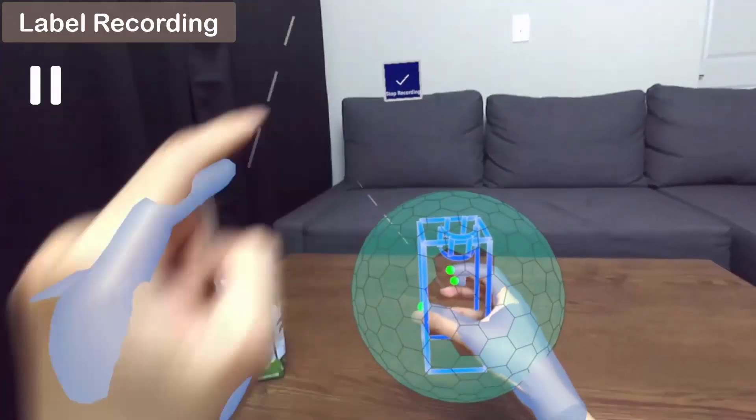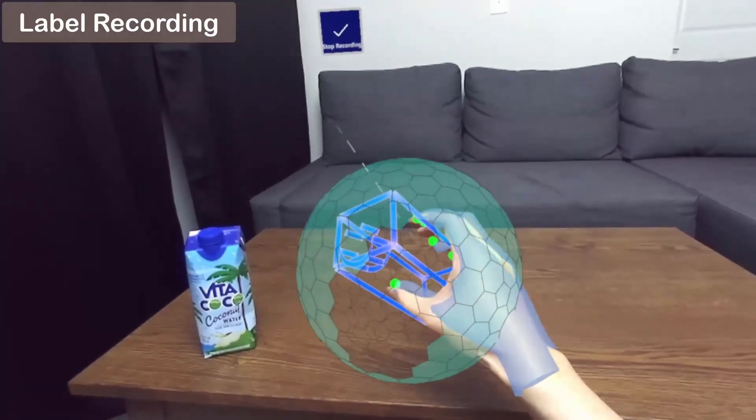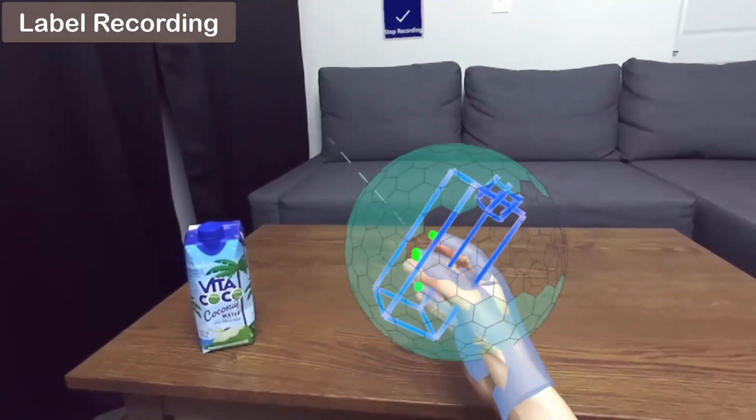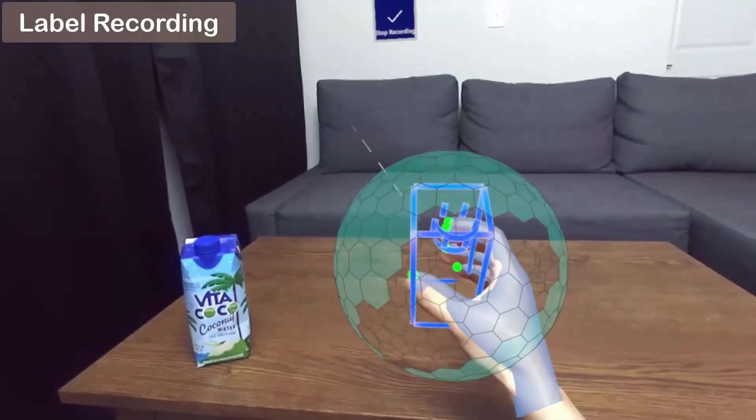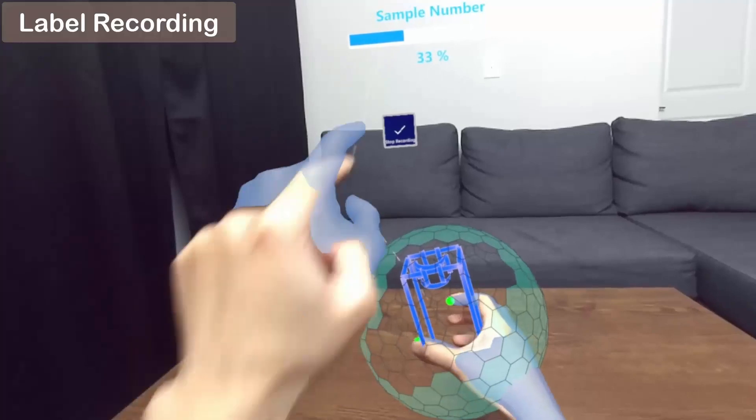Now, the user starts to record dataset labels. Five green dots appear on the user's fingertips as gesture indicators to help the user keep the hand gesture unchanged when manipulating the virtual bounding contour. Meanwhile, parts of the orientation indicator are broken, which means the corresponding perspectives of the object have been recorded.